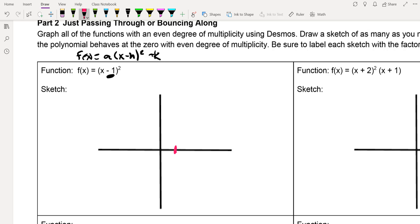So positive one. And then the k value, there's nothing there. So that's like plus zero. So we don't have anything to really worry about. But our parabola would be right there. And our a value is positive. So that would open up.